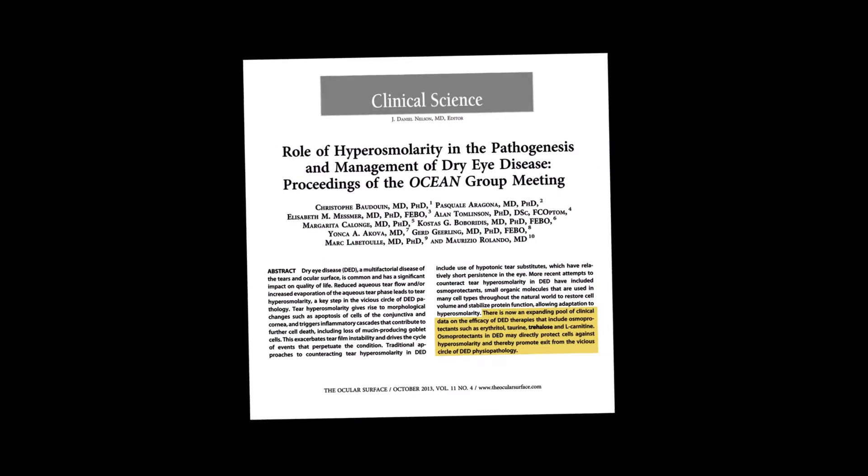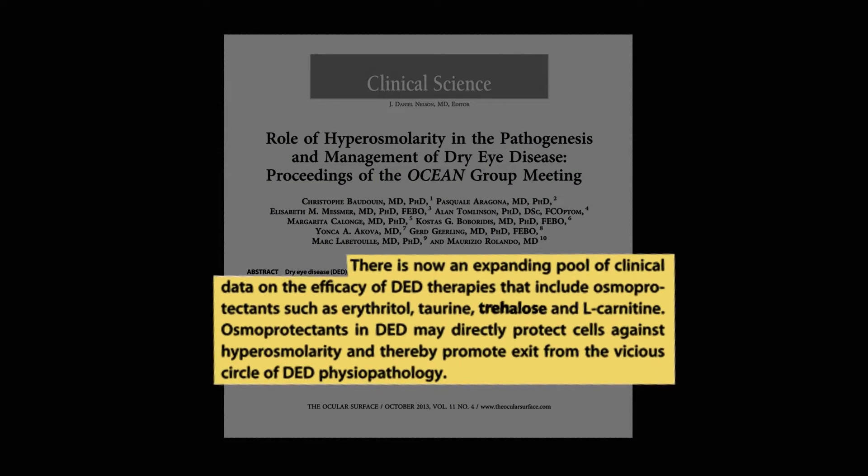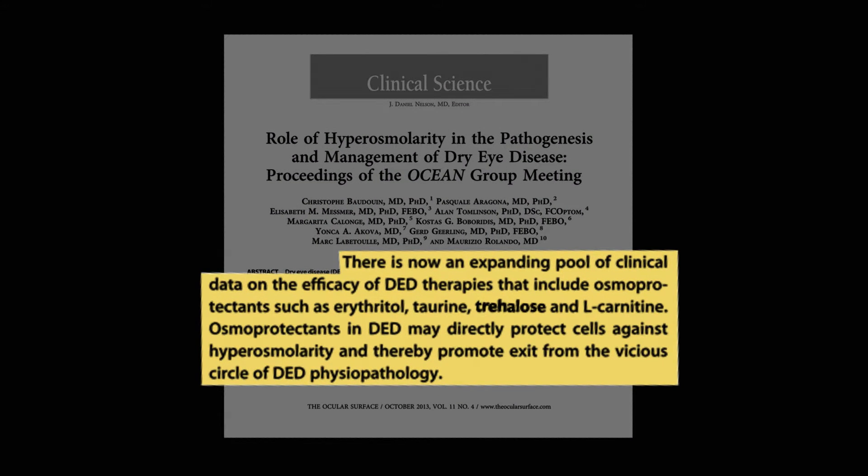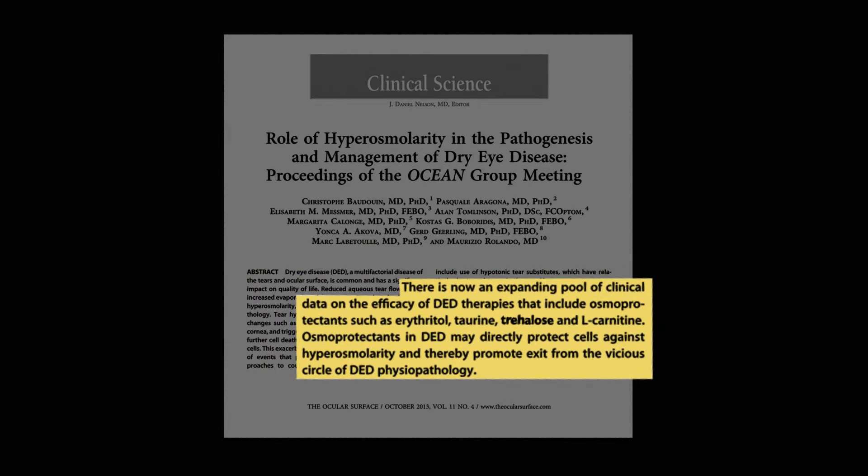There is now an expanding pool of clinical data on the efficacy of dry eye therapies that include osmoprotectants such as erythritol, taurine, treolose, and L-carnitine. Osmoprotectants in dry eye disease may directly protect cells against hyperosmolarity and thereby promote exit from the vicious circle of dry eye disease physiopathology.